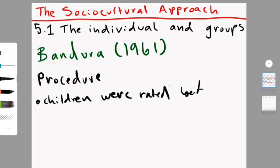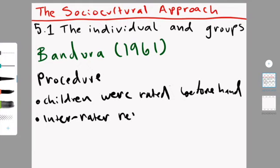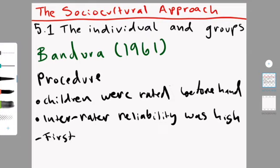Before the experiment began, like the true experiment began, all the children were rated on how aggressive they were. They were rated on verbal aggression, physical aggression, and aggression towards inanimate objects. Now, the inter-rater reliability in this observation, or in this study, was actually very good. They had a very high correlation between the different observers. So essentially what they did here is they took, I think it was three different researchers, and they made the three different researchers rate each child, and then they compared their answers to each other, and it turns out they all rated in very similar ways, which is very good.